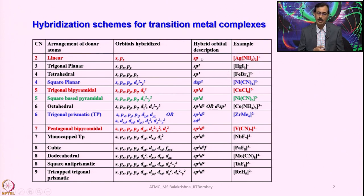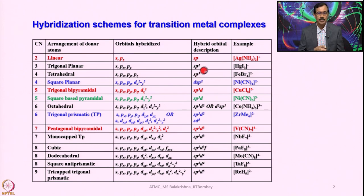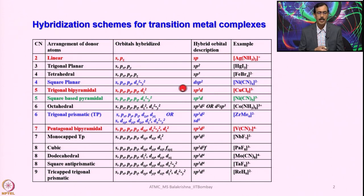Square planar geometry: most D8 metal complexes invariably show square planar geometry, along with D7S2 systems in the +1 oxidation state. For example, rhodium and iridium, along with nickel, palladium, and platinum — that is square planar. The hybrid orbitals used are DSP2. For trigonal bipyramidal, the hybridization is SP3D; I have given one example of copper here.